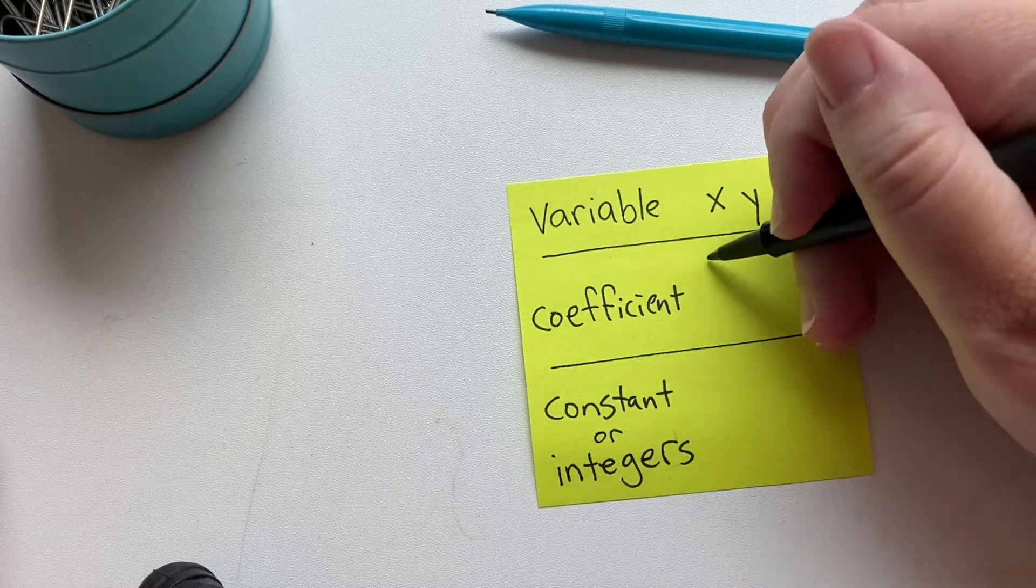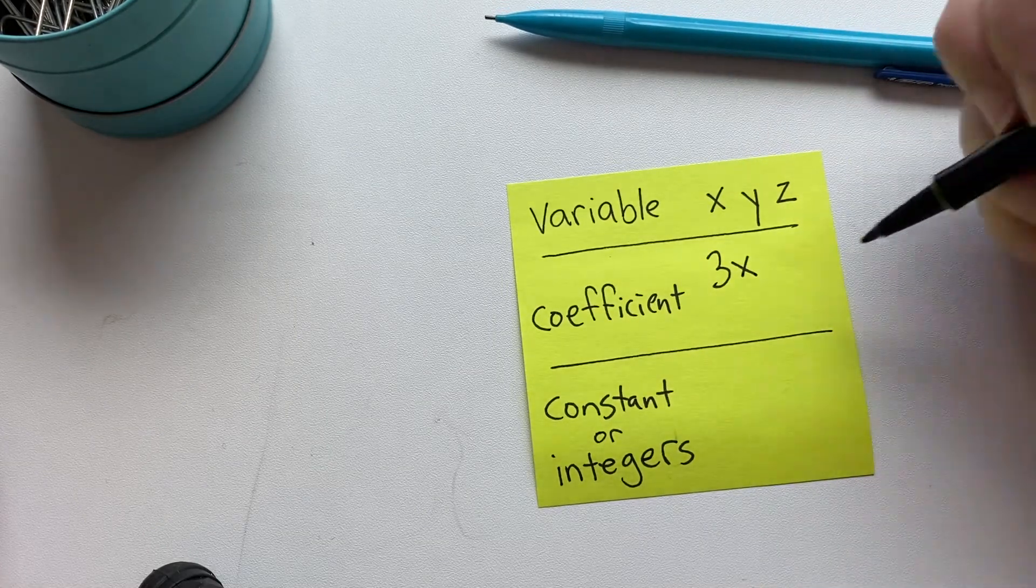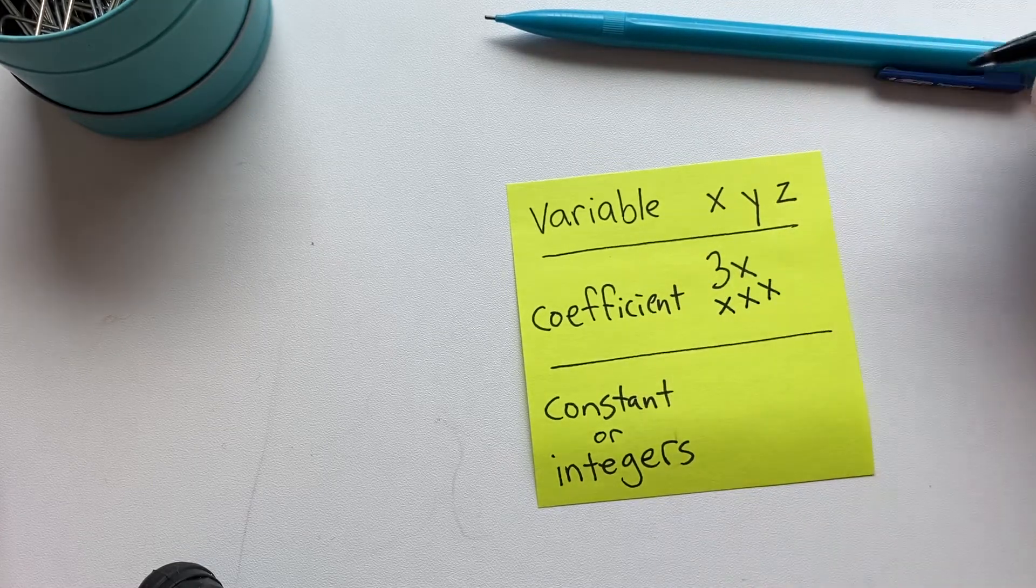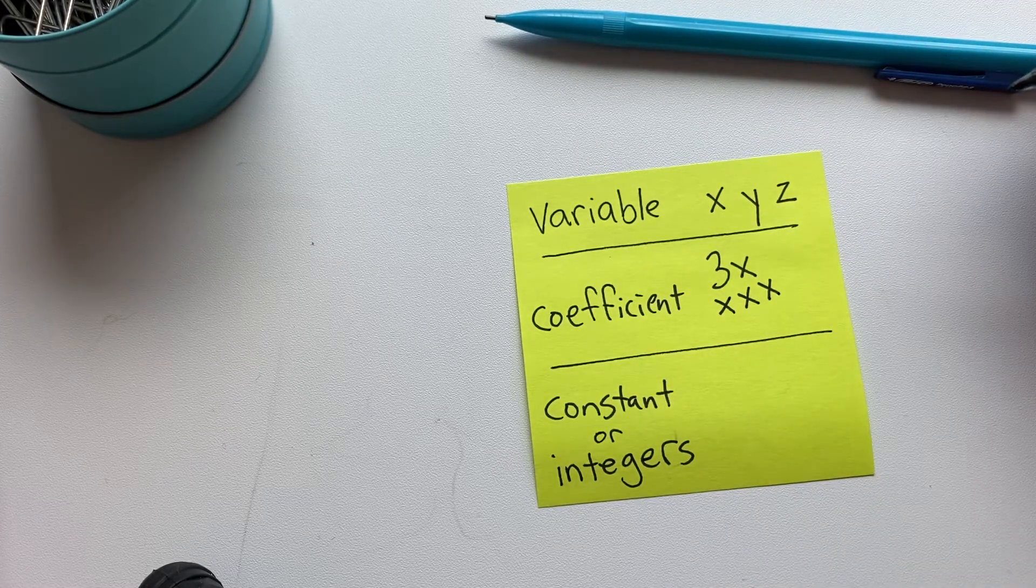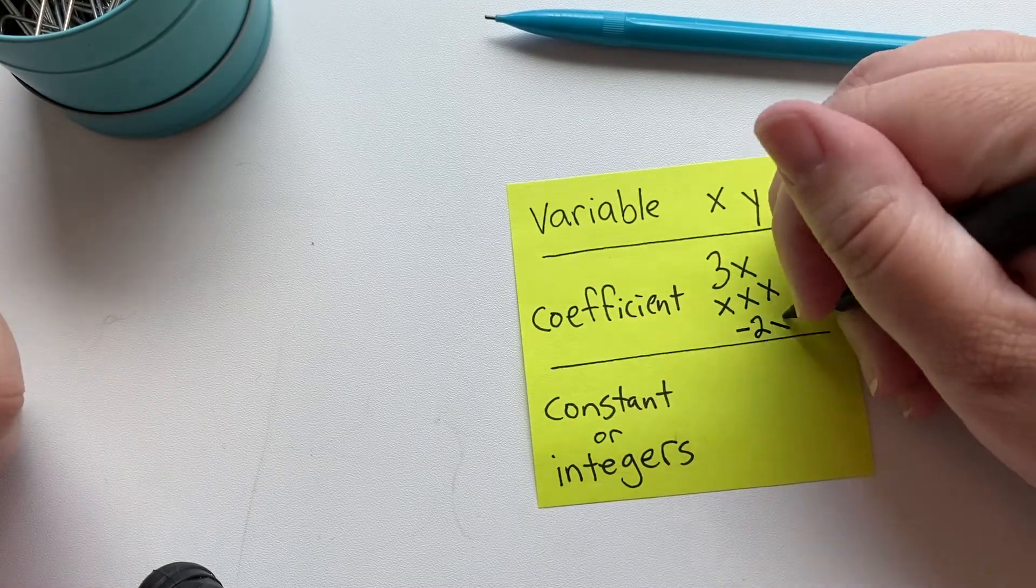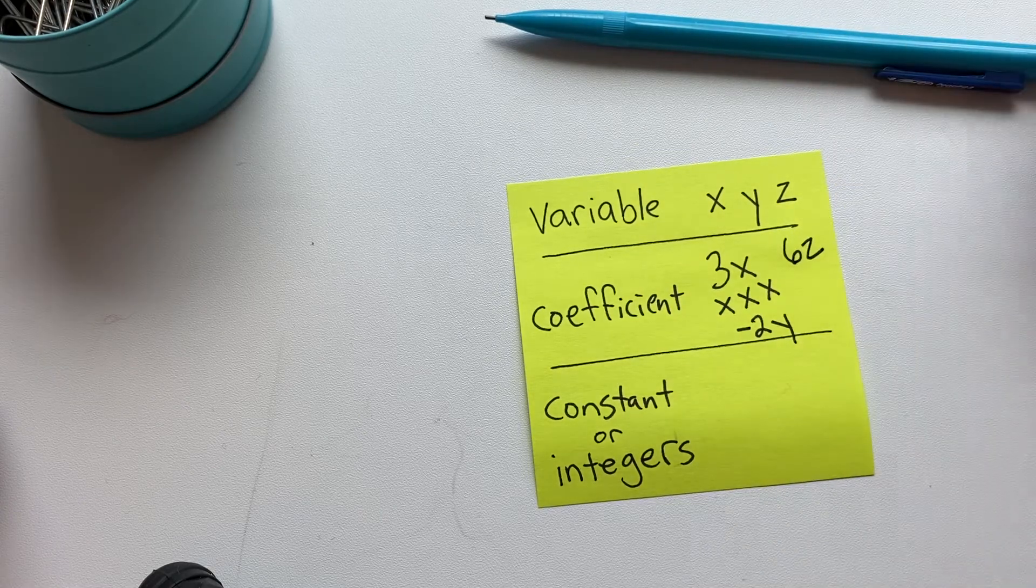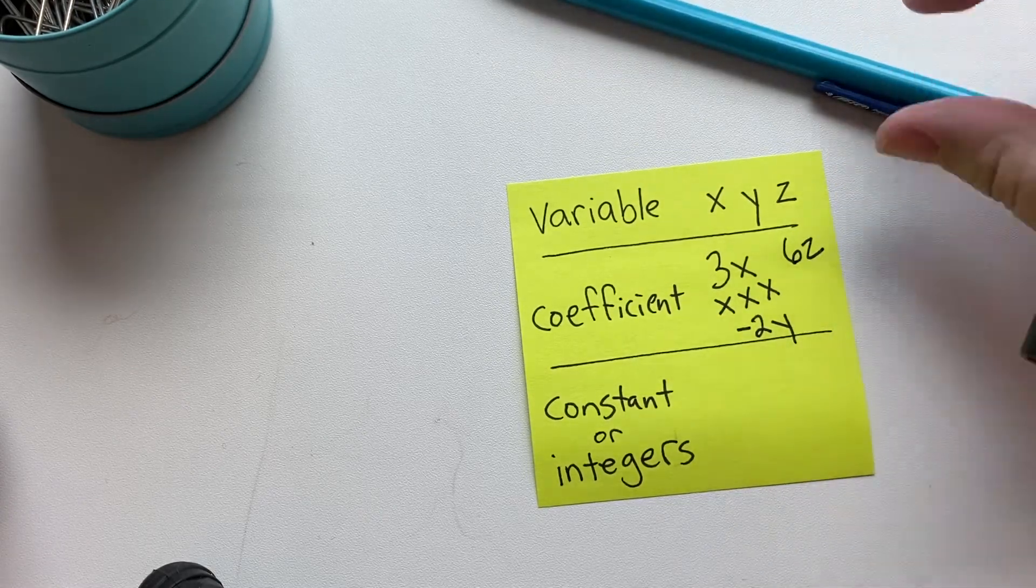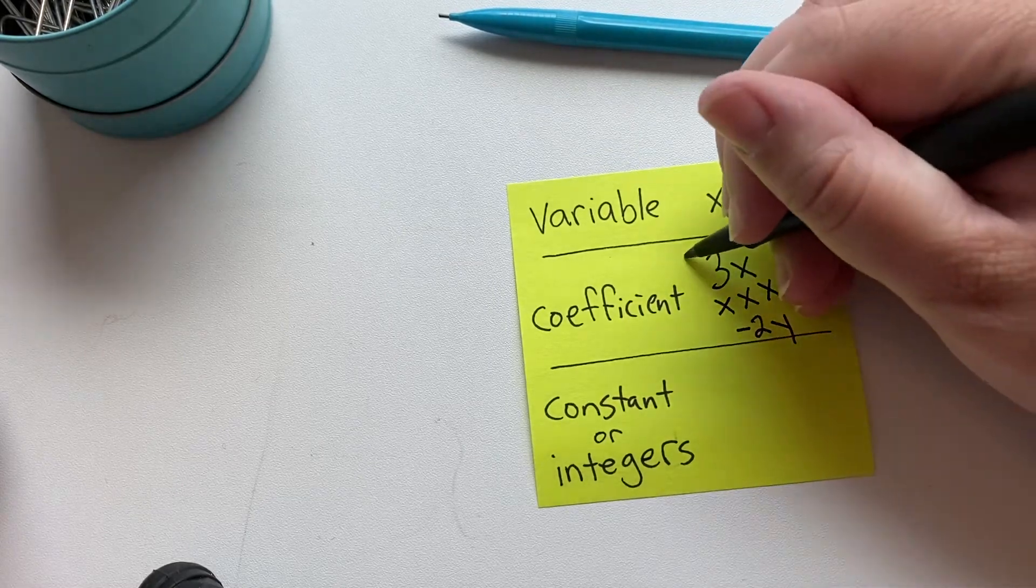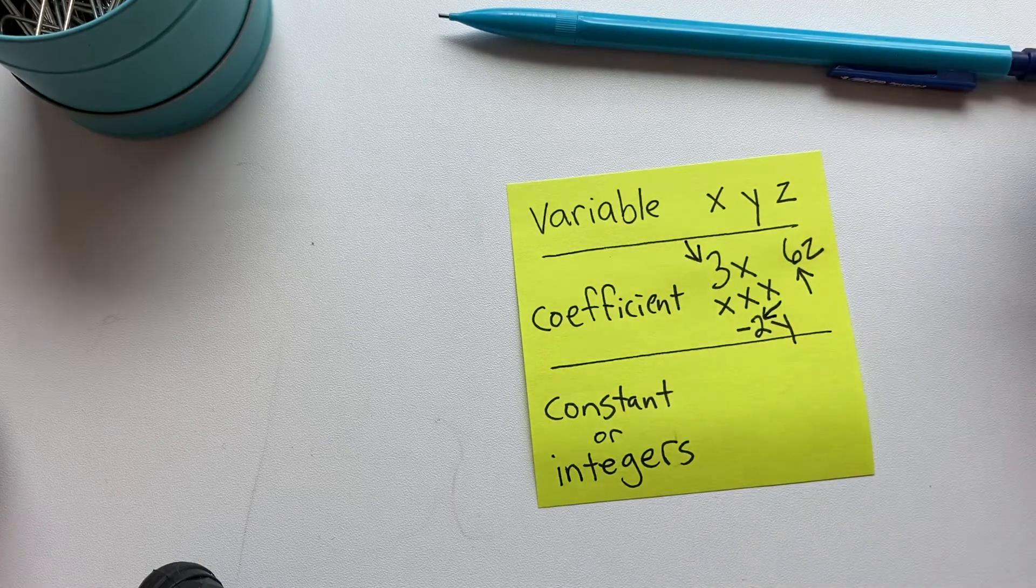Then we have our coefficients. So if we say 3x that means we have three x's, that would be the same as x, x and x. That is 3x. It's an easier way of saying that and that could be negative 2y or that could be 6z. This number is the coefficient and it tells you how many of each variable you have.